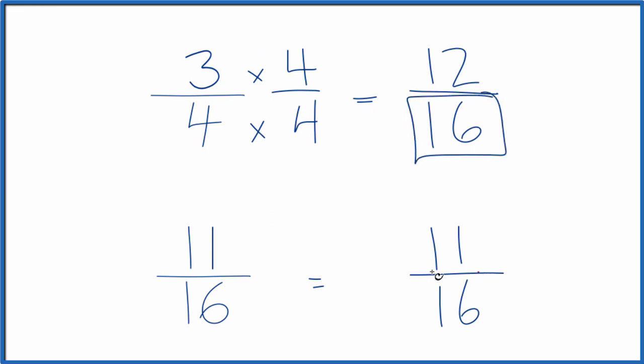Now we have the same denominator. We compare the numerators: 12 is larger than 11, so 12/16 is larger than 11/16. Since these are equivalent, 3/4 is going to be larger than 11/16 as well.